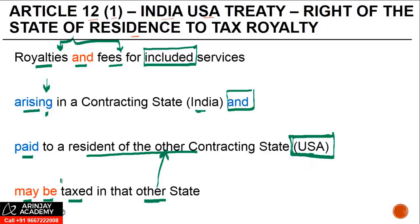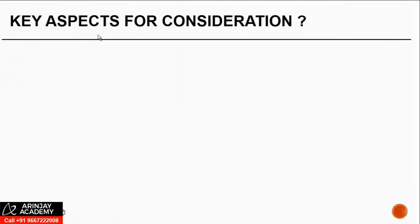The use of the word 'may be' indicates that the royalty may be taxable in the US, but India may also have a right to tax it. That part is specifically not included in Article 12, Paragraph 1 of this treaty, but when we go to Paragraph 2 we'll get that answer. So, what are the key aspects which come up for our consideration?